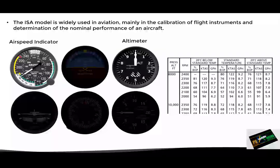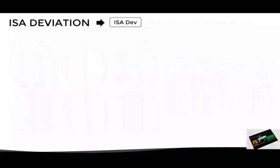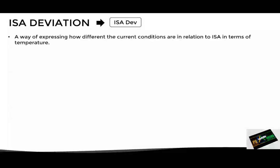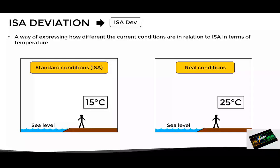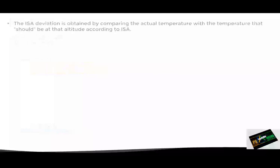As the ISA model is used as a reference, there is another important concept, which is the ISA deviation. This is a term used to express how different the actual atmospheric conditions are compared to the ISA model, normally in terms of temperature. Let's see an example. Suppose a person at sea level measures the air temperature. Theoretically, according to the ISA model, it should be 15 degrees Celsius. However, under real conditions, let's say the person actually measures 25 degrees Celsius. In this situation, if we compare the actual conditions with the standard model, we can see that there is a deviation of 10 degrees Celsius. Since the actual conditions are 10 degrees warmer than the standard, we say that the ISA deviation is ISA plus 10. The ISA deviation is obtained by measuring the difference between the actual temperature and the standard temperature according to the ISA model.